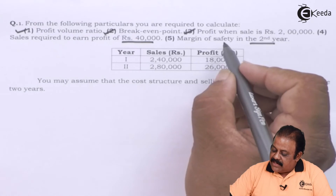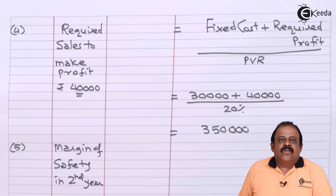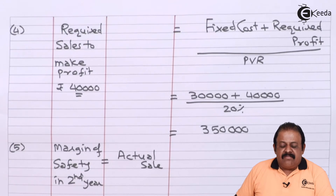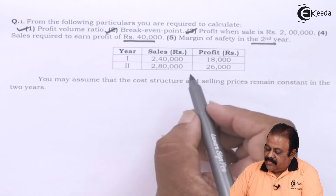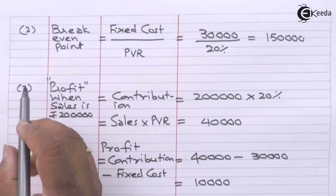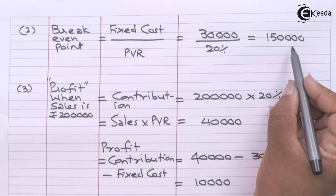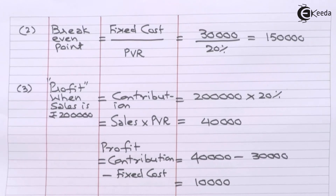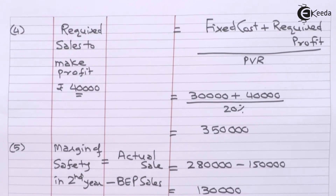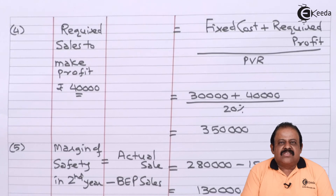The last part asks for the margin of safety in the second year. The formula is: actual sales minus break-even point sales. Actual sales in Year 2 is ₹2,80,000 and break-even point is ₹1,50,000. So the margin of safety is ₹2,80,000 minus ₹1,50,000, which equals ₹1,30,000.